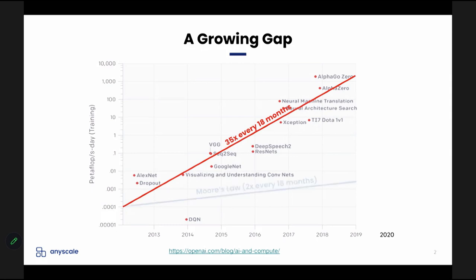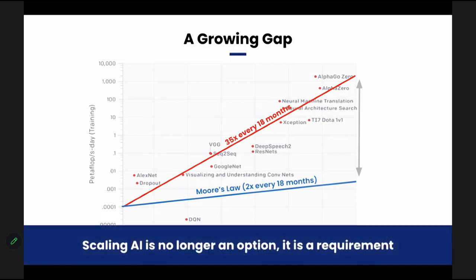If you compare that to something we're all familiar with — Moore's Law, which says that processor performance doubles every roughly 18 months — you can see there's a tremendous gap between the compute needs of machine learning applications and what you can do with a single chip. Even if Moore's Law were continuing strong, there would still be a tremendous gap between what you can do with a chip and what you need in order to do machine learning. Given this graph, what has been clear to us since we started this company is that doing AI requires scaling. There's no way around it — it's not a nice to have, it's really a requirement.